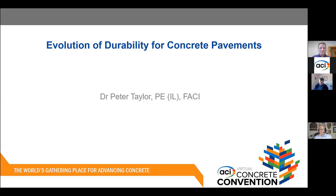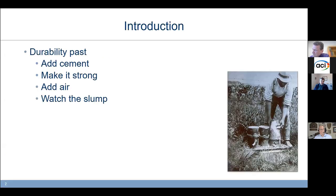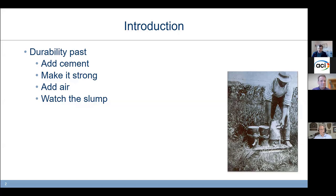My role is to talk about durability, and I figured the easy way to do this is to look at how the way we think about durability has evolved and is continuing to evolve over time. When I first got involved in this game, before Shiraz had any gray hair, the way we used to approach permeability or durability was we would add cement, make it strong, specify a big strength number, write a specification, and pay bonuses on strength. We would make sure there was lots of air, and if we were in doubt, we would measure the slump. This sort of kind of worked because for the mixtures we were working with way back when, all of these activities indirectly affected the water-cement ratio.